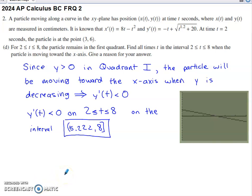Last part of this, probably the trickiest part in my opinion, says on the interval 2 to 8, the particle remains in the first quadrant. Find all times t in the interval 2 to 8 when the particle is moving toward the x-axis. Give a reason for your answer.